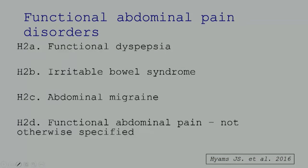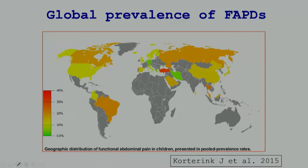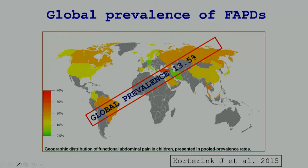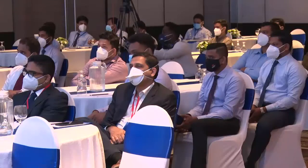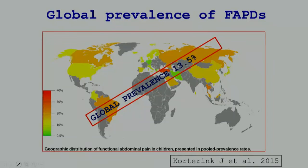What are the four functional abdominal pain disorders in children? The first two — IBS and functional dyspepsia — are familiar, but we also have abdominal migraine and functional abdominal pain not otherwise specified. How common are they? A world map drawn by Courtney et al. in 2015 shows about 13.5 percent prevalence. Most South Asian countries have completed epidemiological studies; India recently conducted a large one showing around 10 to 15 percent.